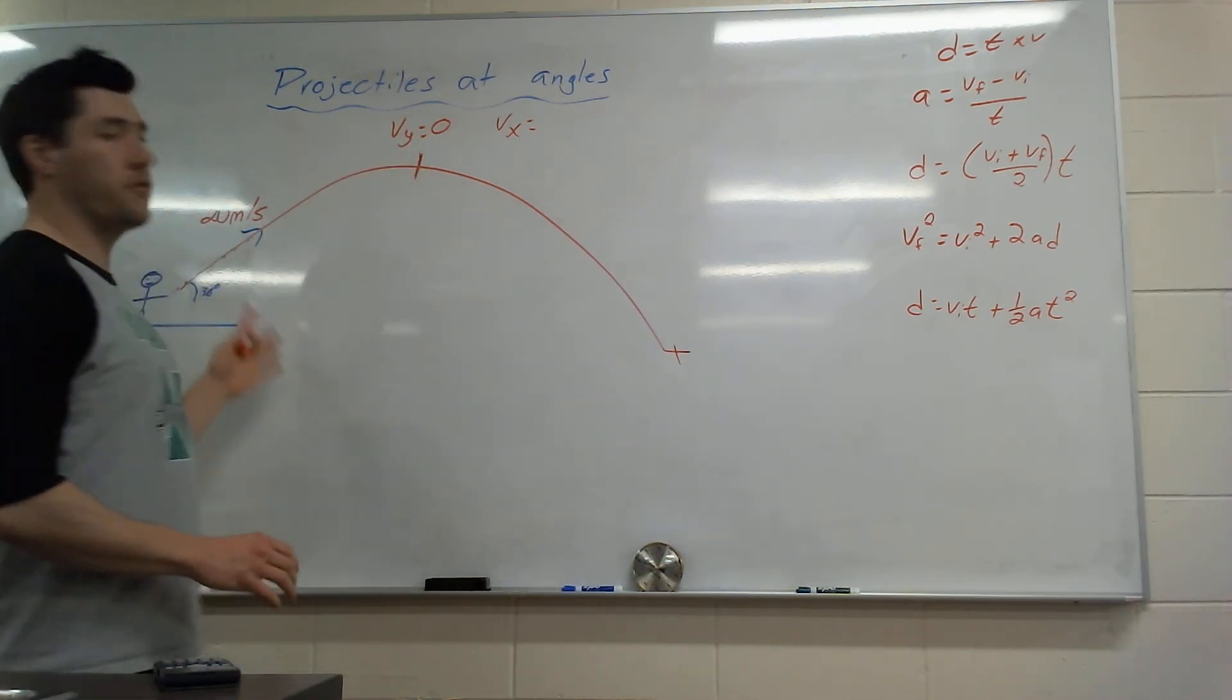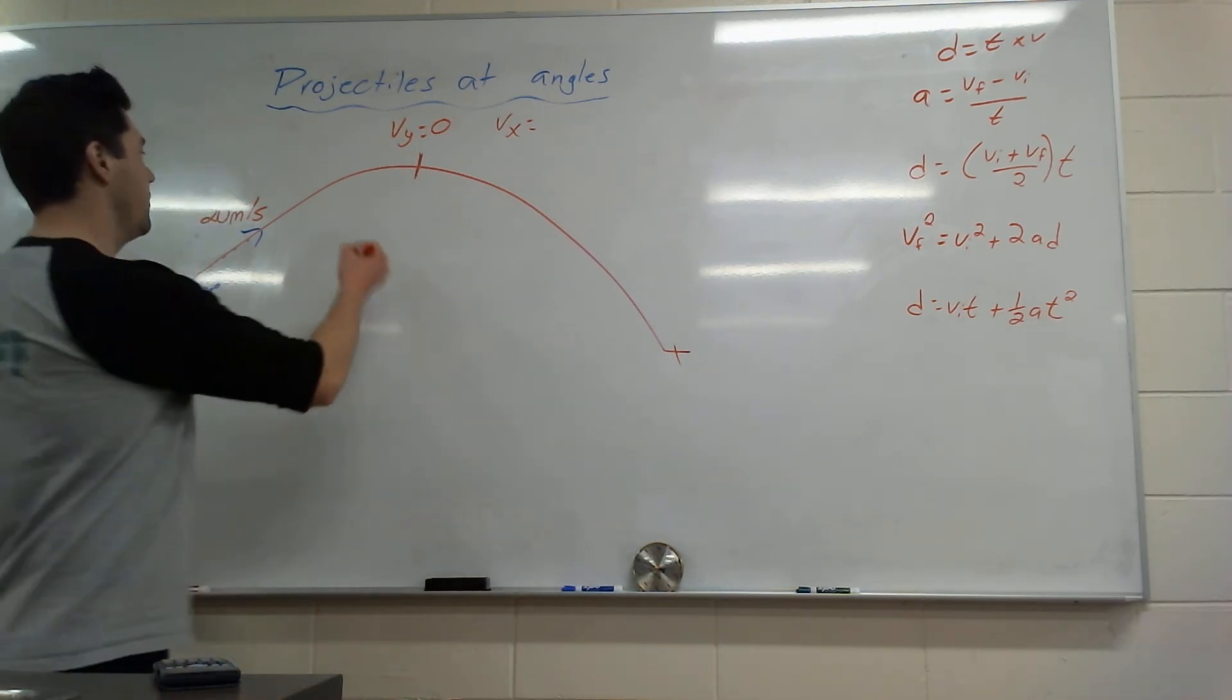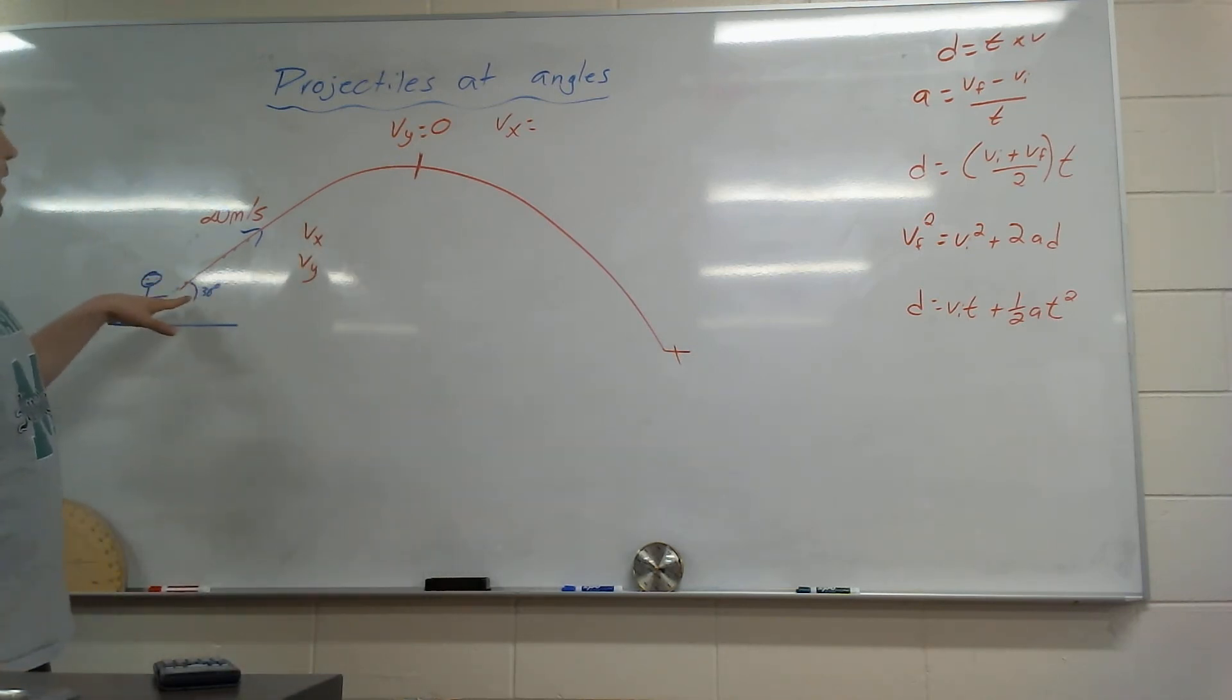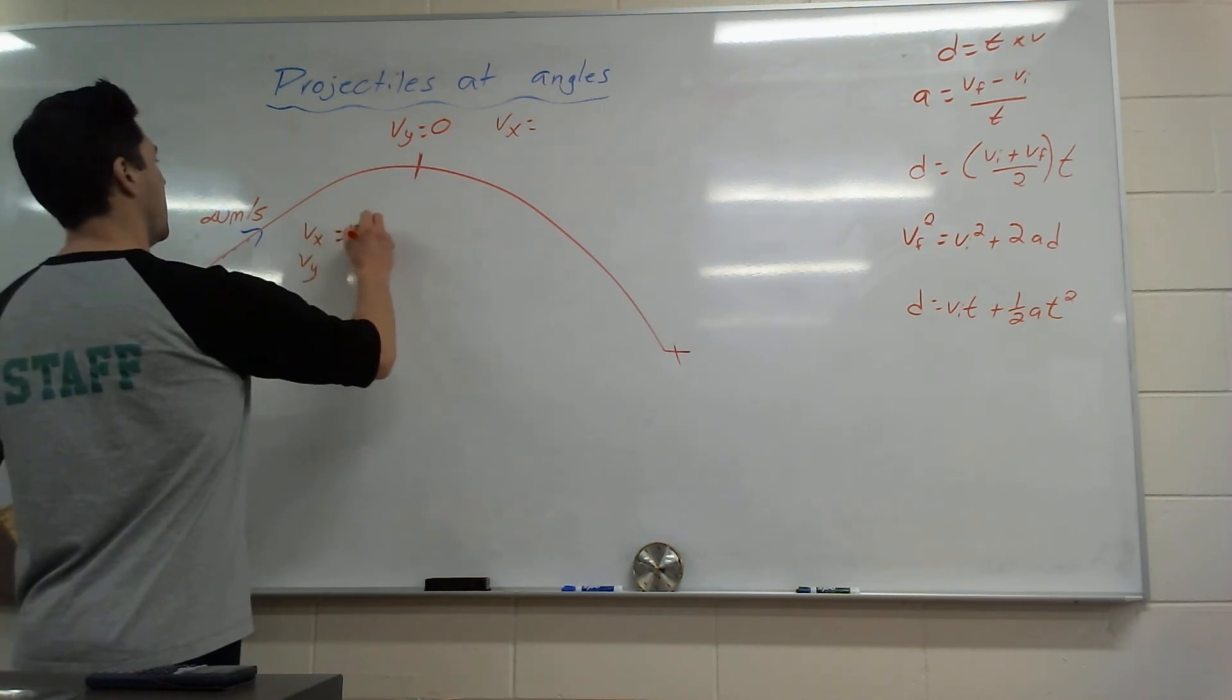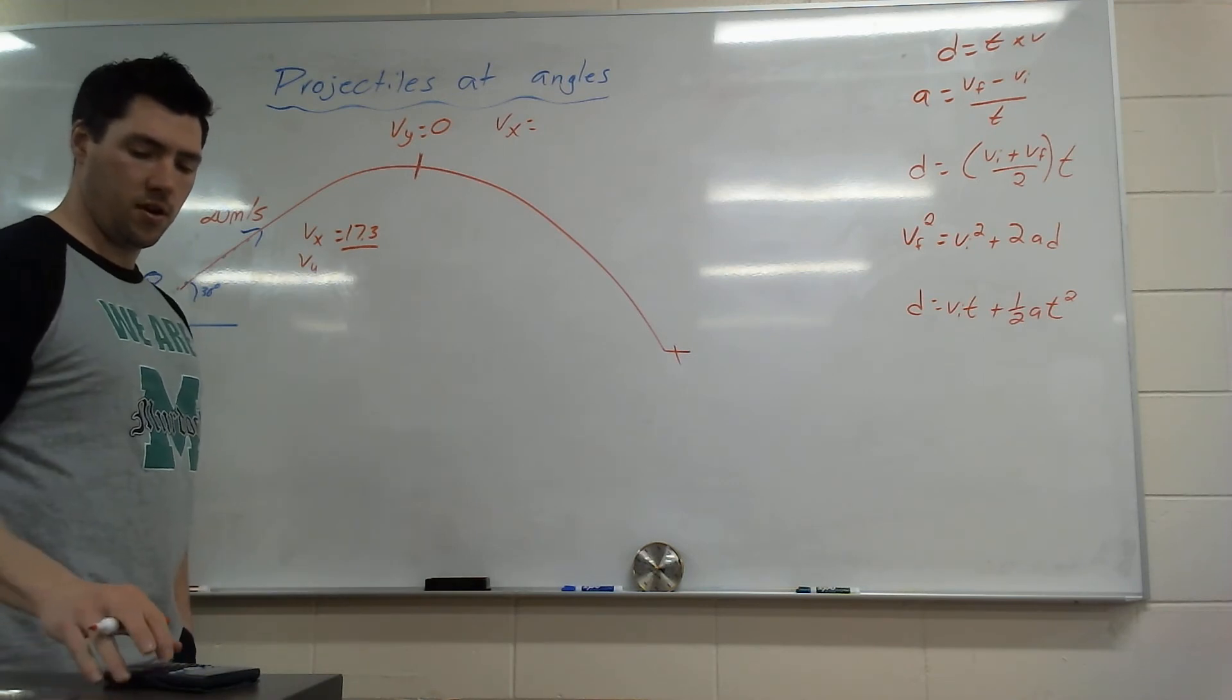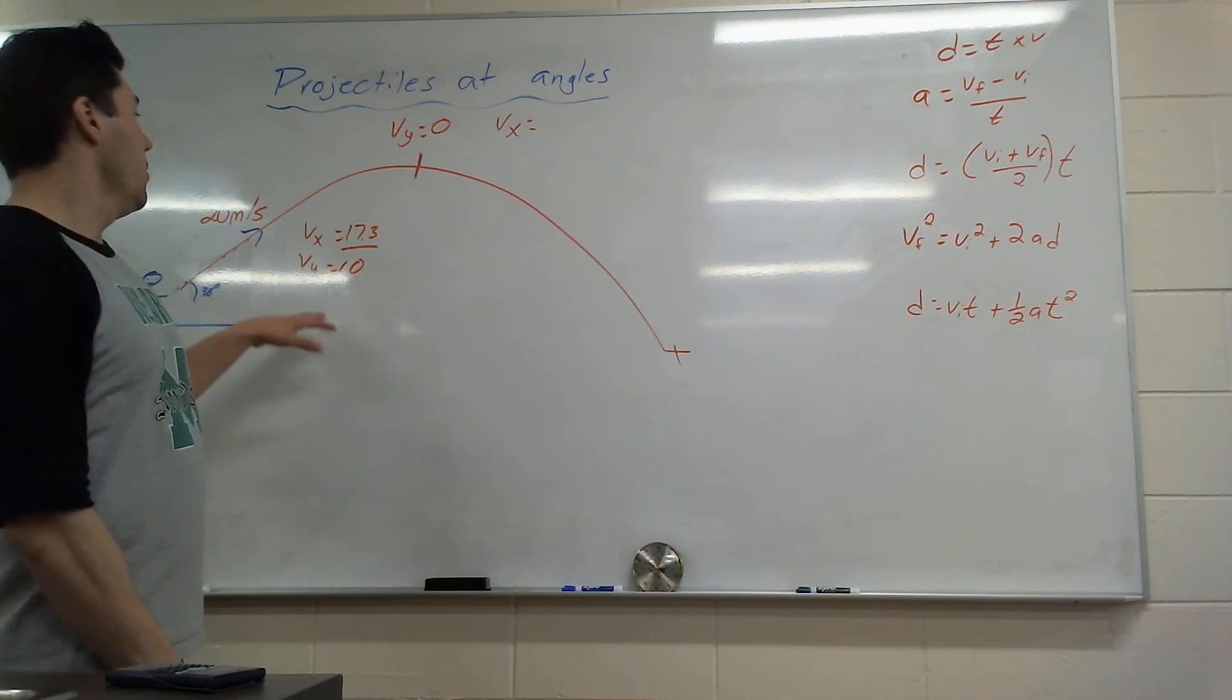So how would I first start this off? You're always, always going to want to break your actual initial velocity, 20 meters per second, into your Vx and Vy. So what is my Vx? What is my Vy? If I'm looking at 30 degrees, my cos is going to be my x, my sine opposite is going to be y. So if I go cos of 30 times 20, I get 17.3, which is going to be consistent the whole time. That's not going to change. And then if I go sine of 30, that's 0.5 times 20, I get 10. So my Vy is 10.